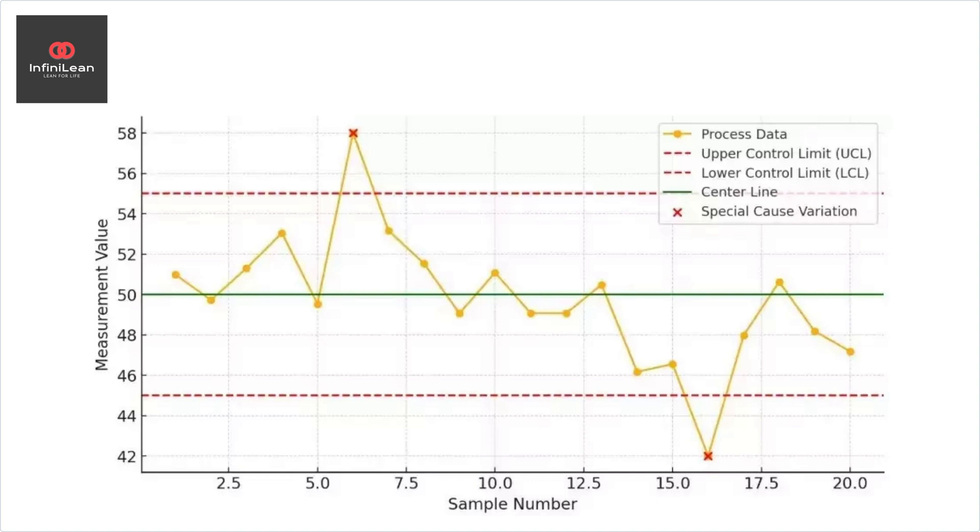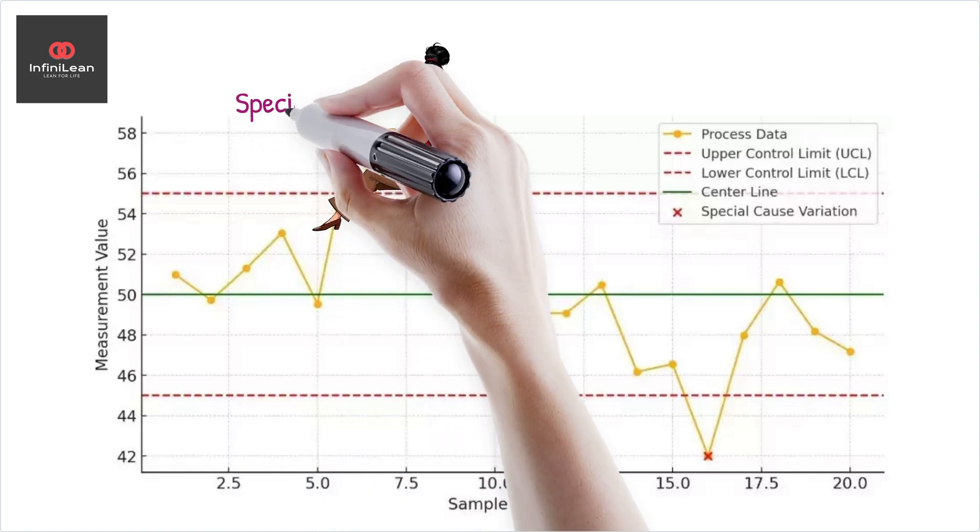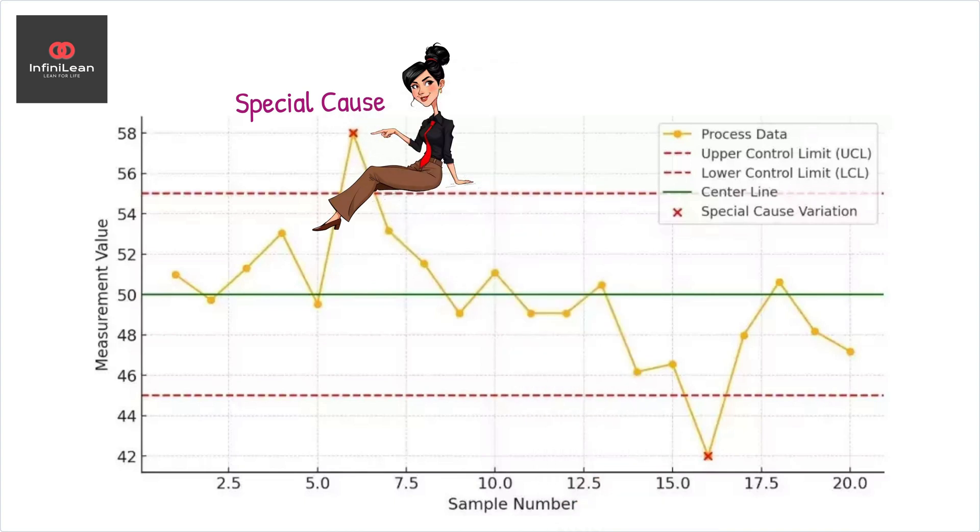On the other hand, special cause variation is extraordinary. The unexpected fluctuation falls outside the regular process pattern, often indicating a problem that needs immediate attention.